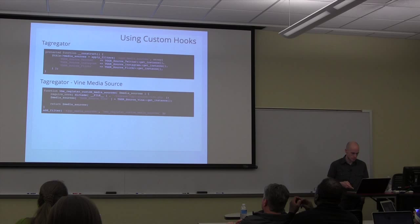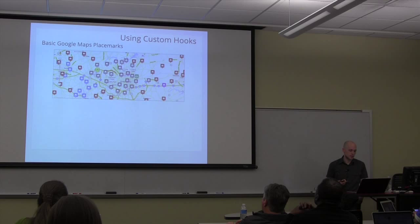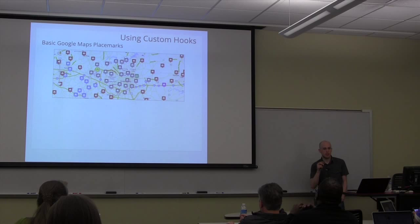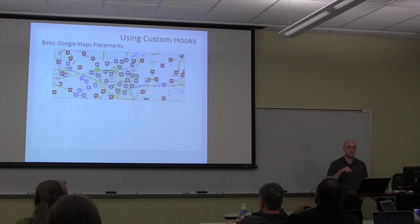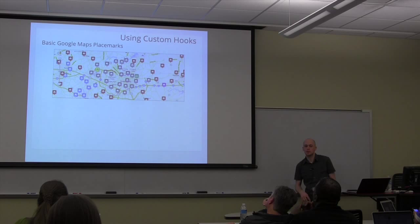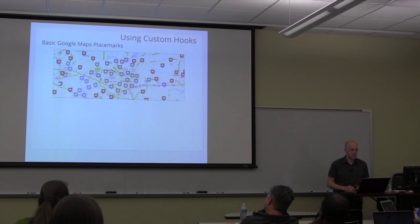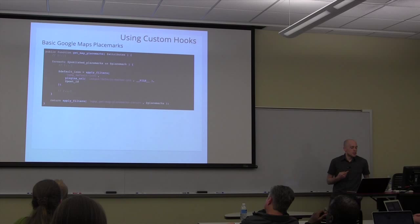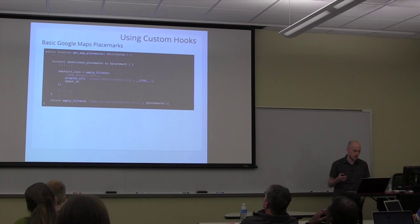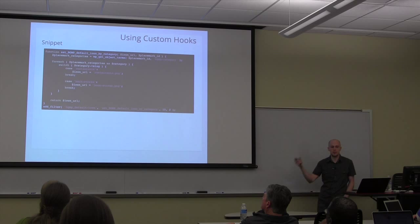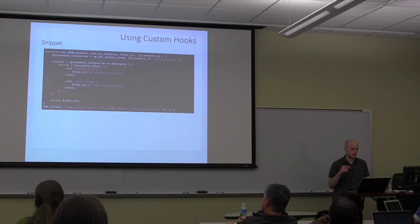Another example is a plugin I wrote called Basic Google Maps Placemarks, which embeds a Google map with a custom post type for markers. You can set the featured image to determine what icon a marker has. That works great if you have a few, but if you're doing something for an entire state — mapping all the fire stations — you don't want to manually set each icon when there are four different icons based on the type of station. There's a filter around the icon variable in the function that gets all the custom posts.